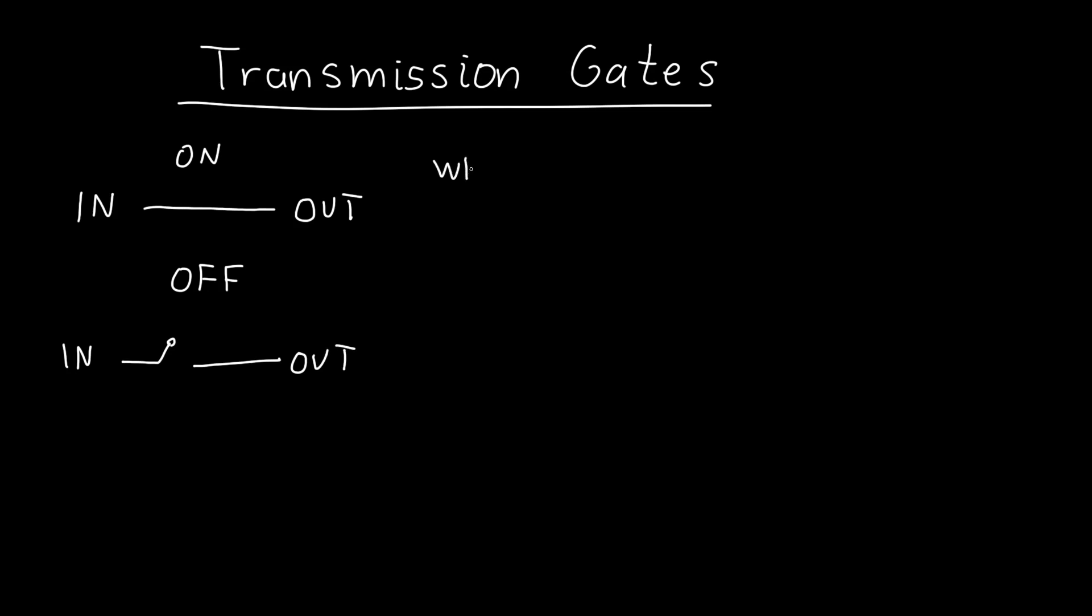So first of all, why would we want something like this? Well, it's very useful for, in particular, things like multiplexing. So when we're trying to choose between two different signals, for example, A and B, we can use transmission gates to selectively block one signal and let the other one through.